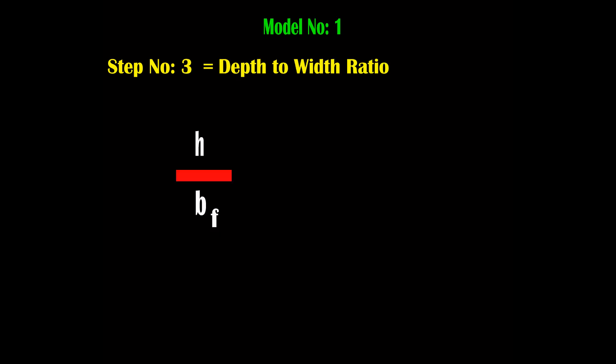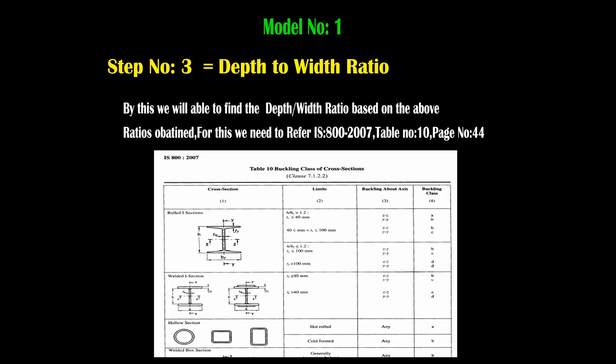Step number 3 is the depth-to-width ratio, which is H divided by BF, where H represents depth and BF represents width of the I section. Based on this ratio, we classify the section. We find depth by width ratio, and based on those values, refer to IS 800-2007 Table number 10, page number 44 to determine the buckling class.